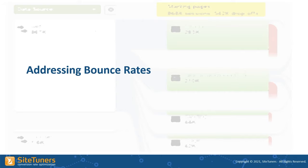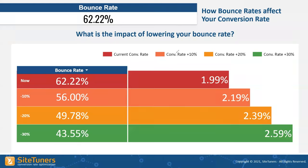Let's play a what-if. If the bounce rate is 62% and we lowered it by 10%, we could get approximately a 10% increase in conversion rate. When we bring on a new client, lowering bounce rate as a way of improving conversion rate — because it's all about aligning user intent — is one of the first things we look at.